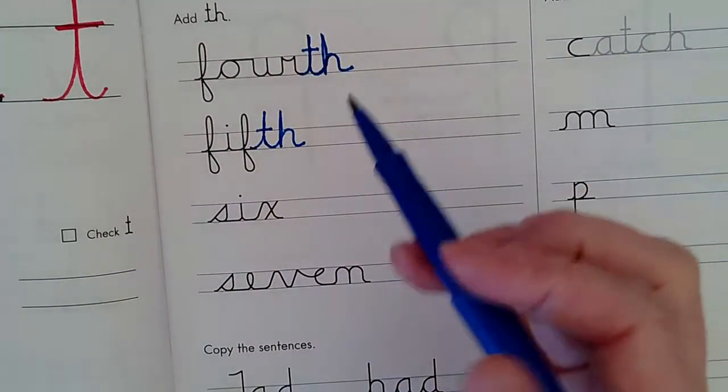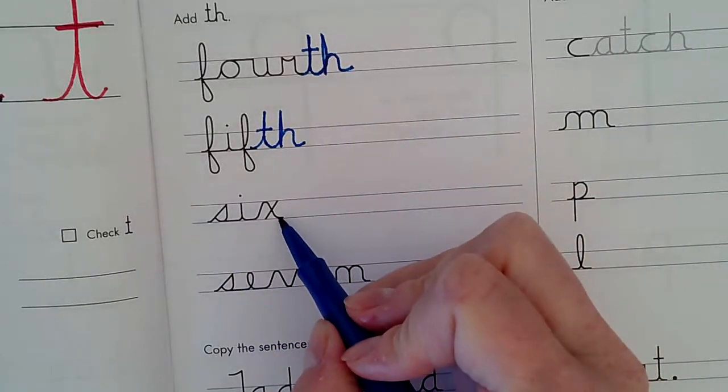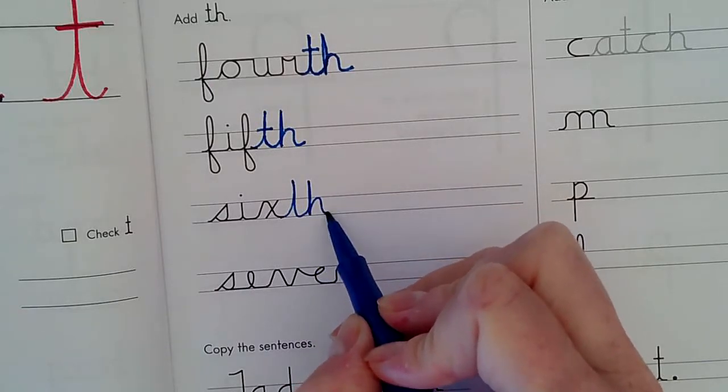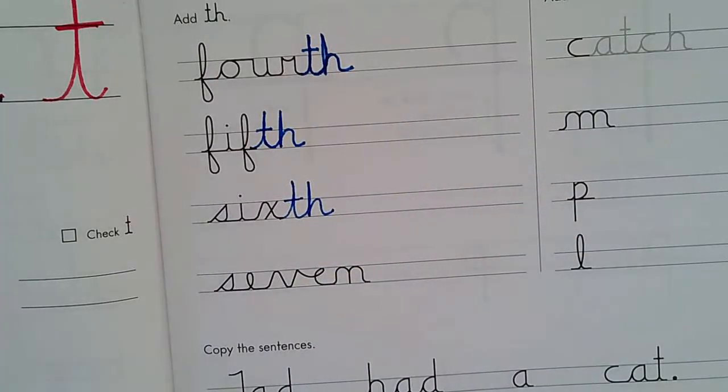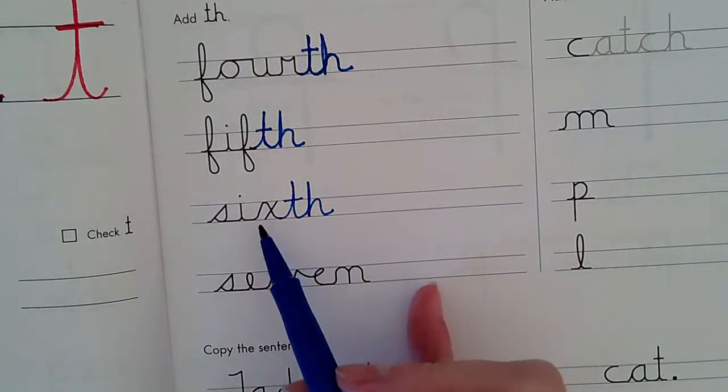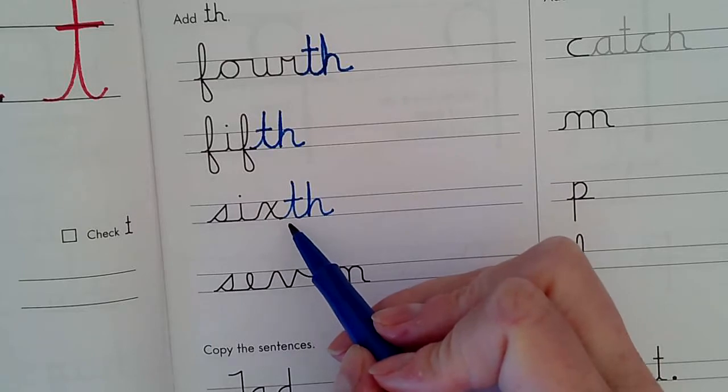And I notice a pattern here. Here's the word six, and if I add TH, it says sixth. Sixth. That can be a hard sound for some people, the TH sound. So as you write these words, practice that sound. Th. Sixth.